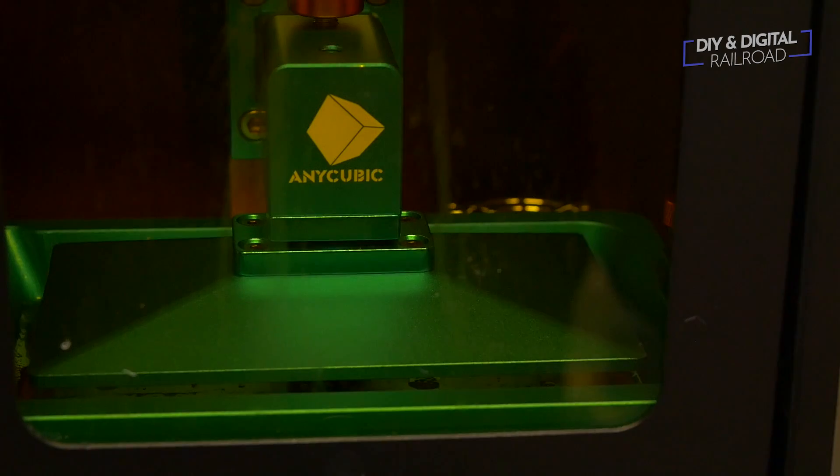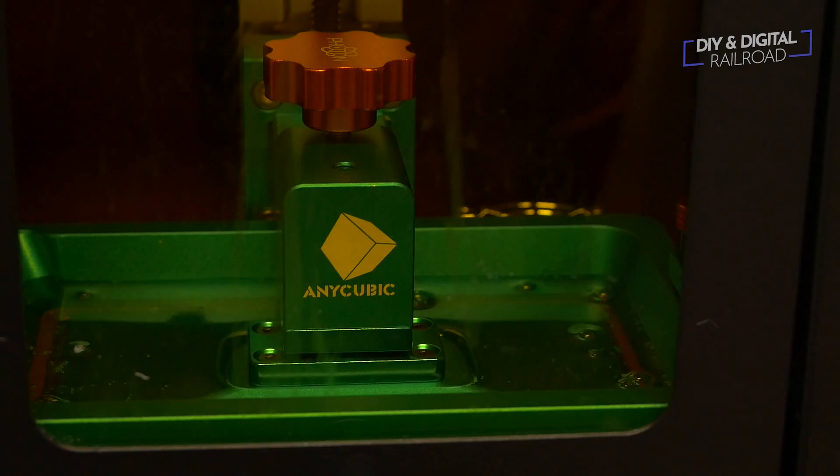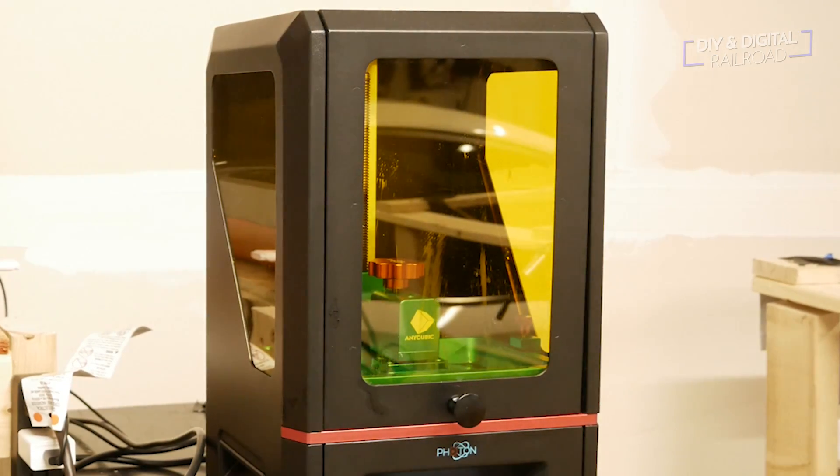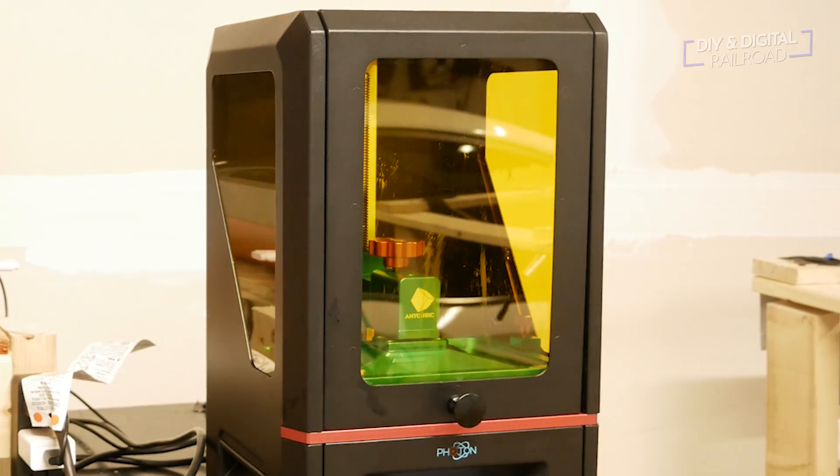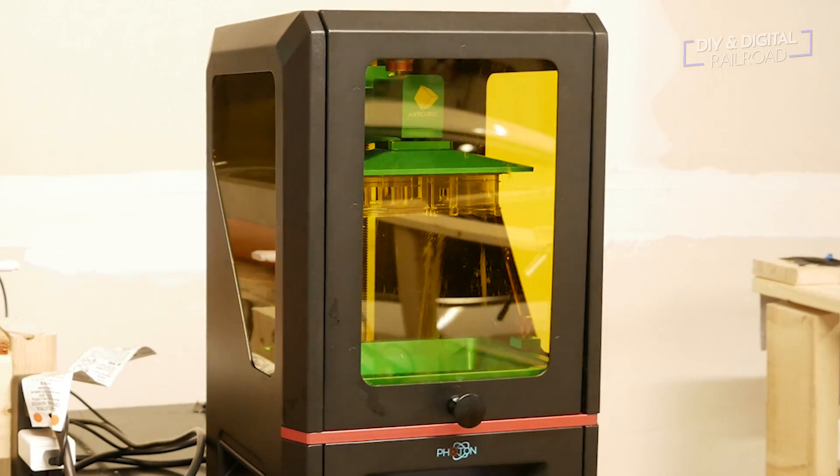The build plate goes into the resin, and begins printing. You can see how the build plate slowly raises and lowers. That's allowing resin to come back in after each layer has been cured.